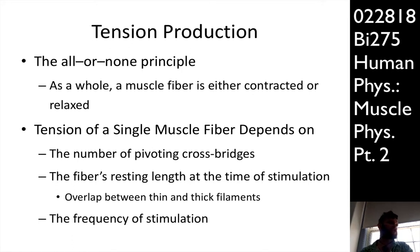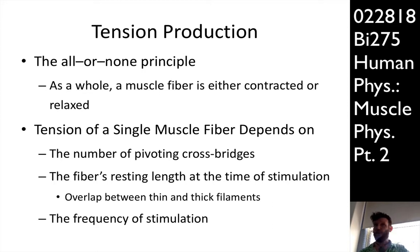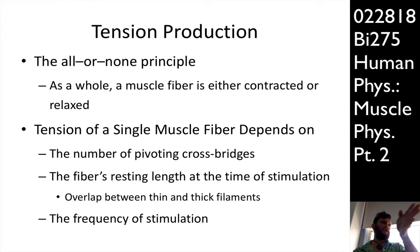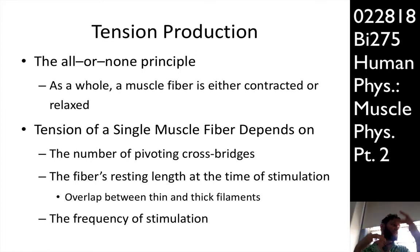Muscle contraction follows the all-or-none principle — you don't get half an action potential. Since the sarcolemma is excitable tissue, if you start a muscle fiber contracting, it will contract as much as it possibly can. In a single muscle fiber, it's either all on or not. The gradation of tension in a whole muscle is a function of muscle fiber recruitment — how many muscle fibers in that muscle are being recruited for any particular contraction.